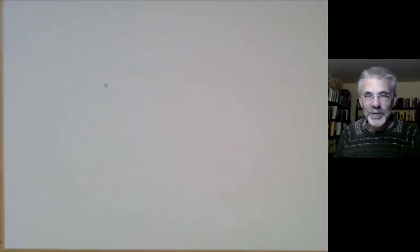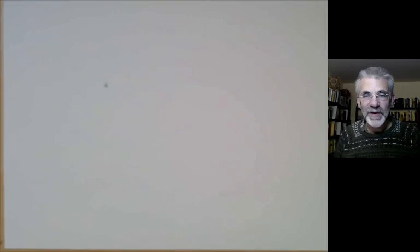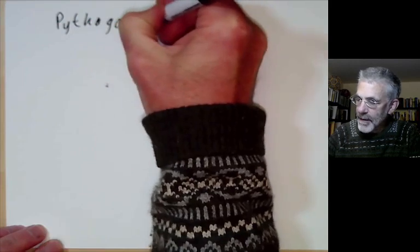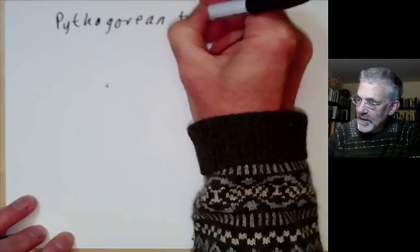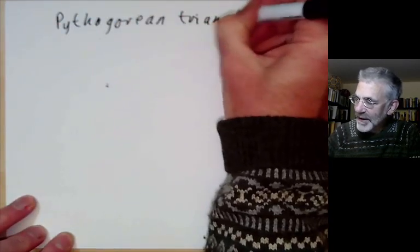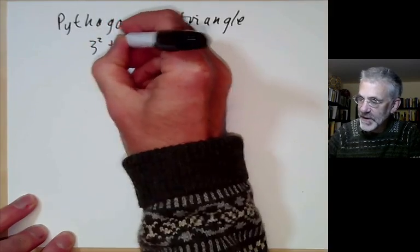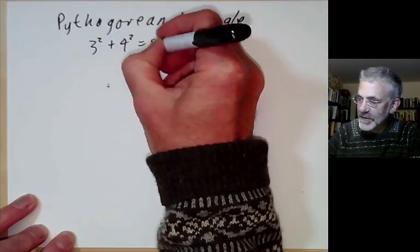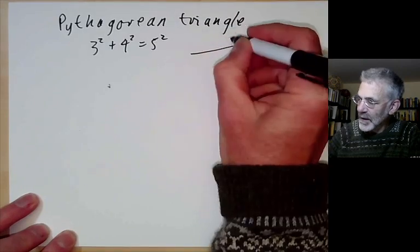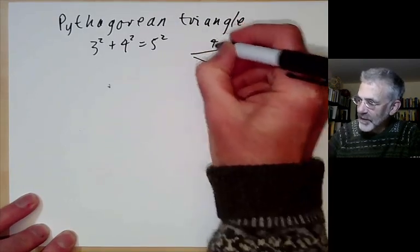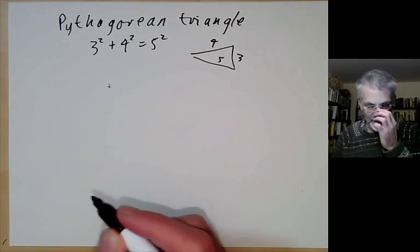This lecture is part of Berkeley Math 115, an introductory undergraduate course on number theory, and will be about Pythagorean triangles. There's one obvious example that everybody knows: the famous equation 3 squared plus 4 squared equals 5 squared, where we have a triangle with sides 3, 4, and 5, and it has a right angle.